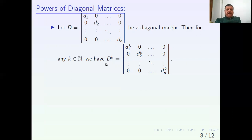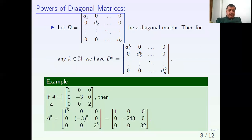Notice the power of a diagonal matrix is also diagonal. Let's take an example. If A equals this matrix with entries 1, 0, 0 in the first row, 0, -3, 0 in the second row, and 0, 0, 2 in the third row.